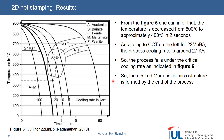This is the CCT curve for 22MnB5 steel - 22 manganese boron 5 steel. You can see this is the critical cooling curve. Our cooling rate should be less than 27 kelvin per second. If our cooling rate is below that, we can say we will be reaching the martensite and bainite region.